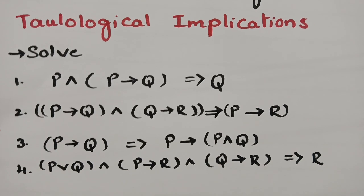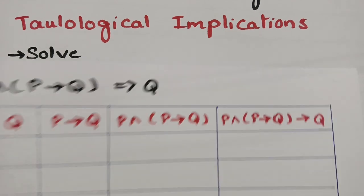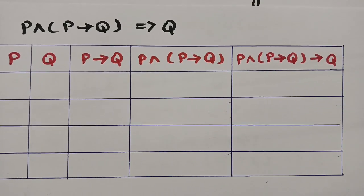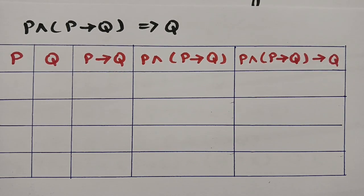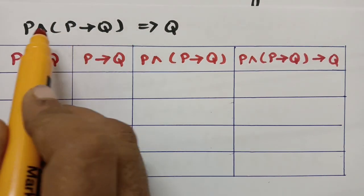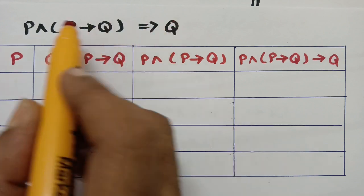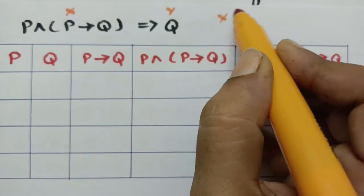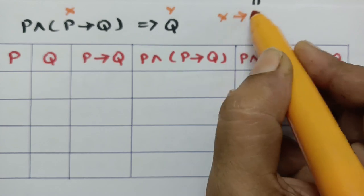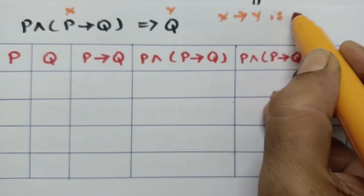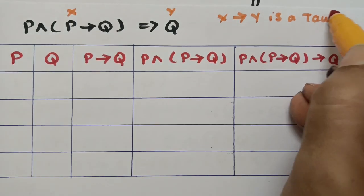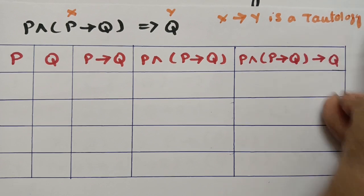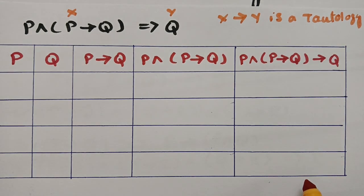We have to consider the truth value tables. For the first example: p∧(p→q) double implies q. We take p∧(p→q) as x and q as y, and we have to show that x implies y is a tautology — meaning the end statement should be all trues.